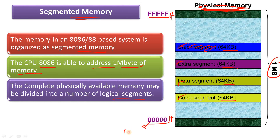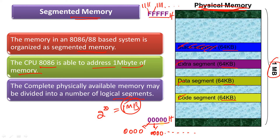With the help of 20 address lines you access 1 megabyte of memory. The address 00000H means all 20 zeros, which is the starting address location. FFFFFH means all 20 ones, which is the ending address location of the memory.